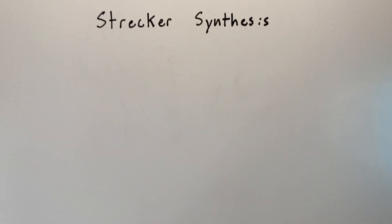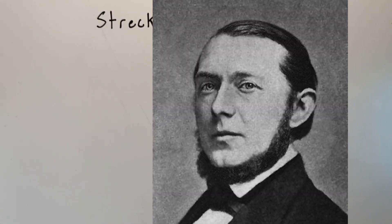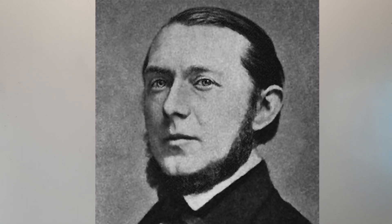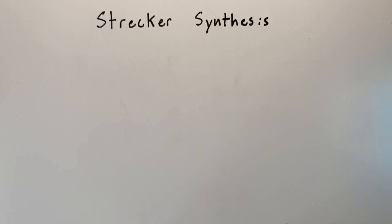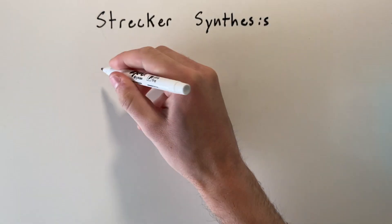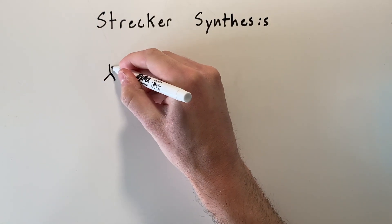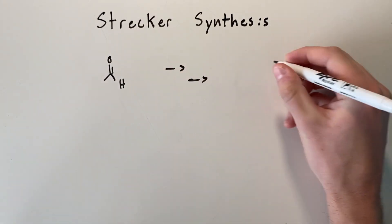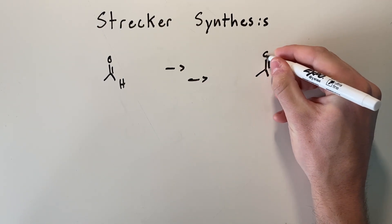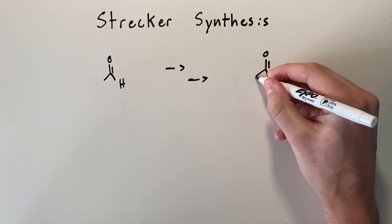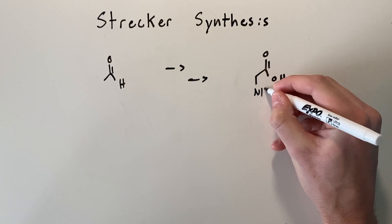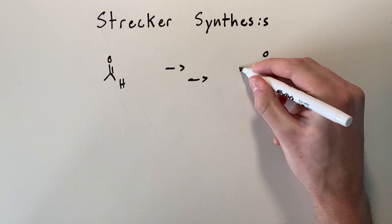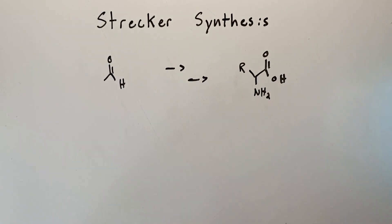Let's do a Strecker synthesis. So Aldolf Strecker first invented his synthesis in the mid-1800s, and it's a way to take an aldehyde and use very simple reagents to eventually form an amino acid, which is a carboxylic acid bound to an amine group bound to some R group, and the R group determines the functionality of the amino acid.